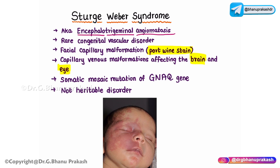Sturge-Weber syndrome is caused by a somatic mosaic mutation of the GNAQ gene. This is a gain-of-function mutation in one copy of the gene, which leads to malformation of the capillaries. The GNAQ gene encodes for a guanine nucleotide-binding protein — a G protein subunit alpha-Q — that functions mainly to regulate intracellular signaling pathways, and this is where the mutations occur.